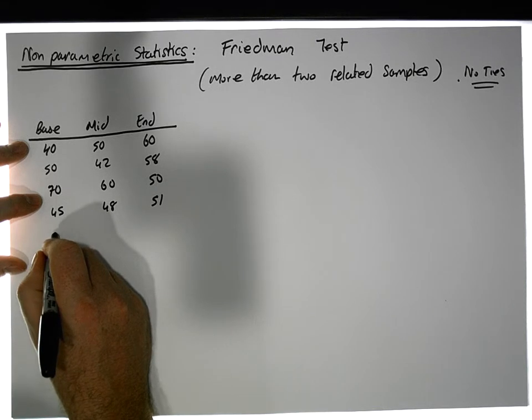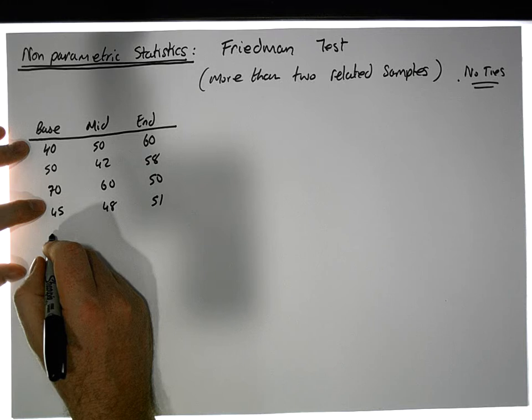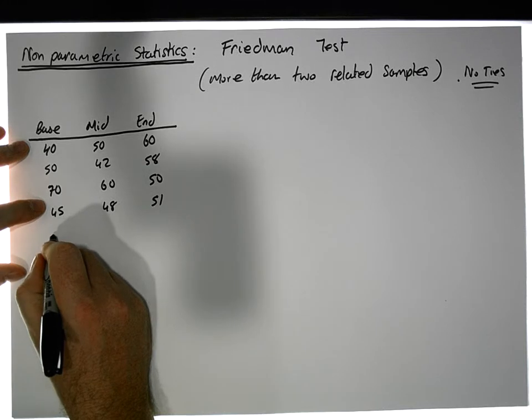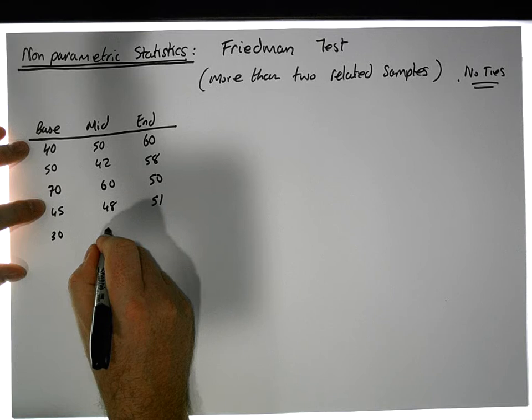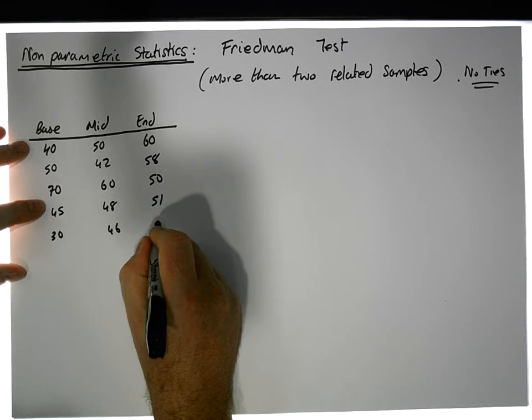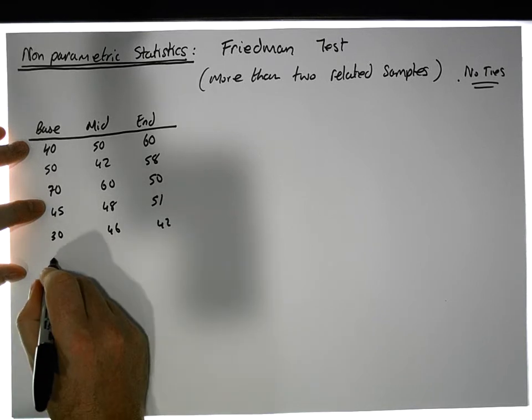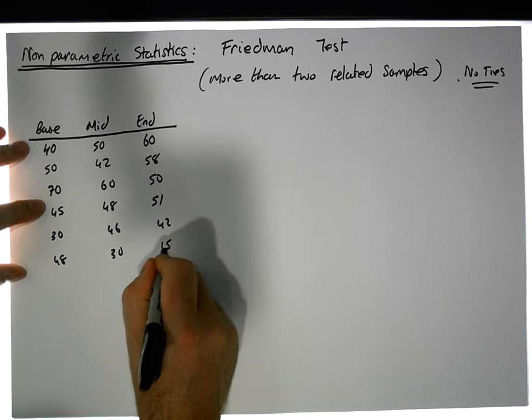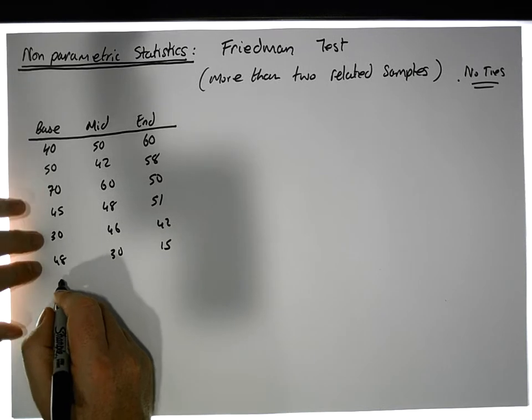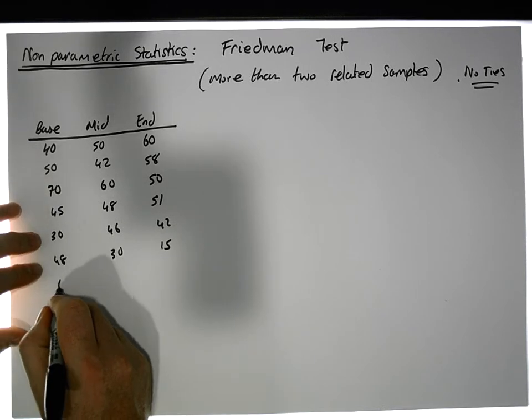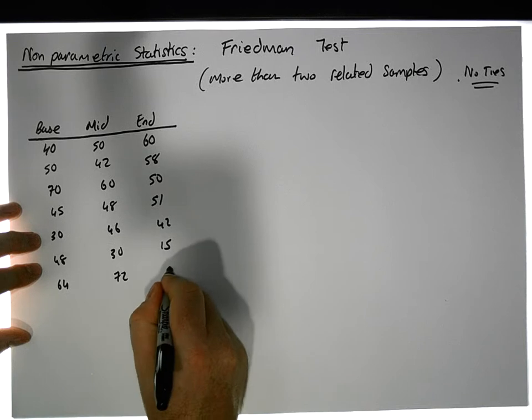It's hard to generate random values when you're on the spot and the camera is rolling. Let's say we have 30, 46, and 42. Let's say we have 48, 30, and 15, and let's throw in one more measurement: 64, 72, and 85.